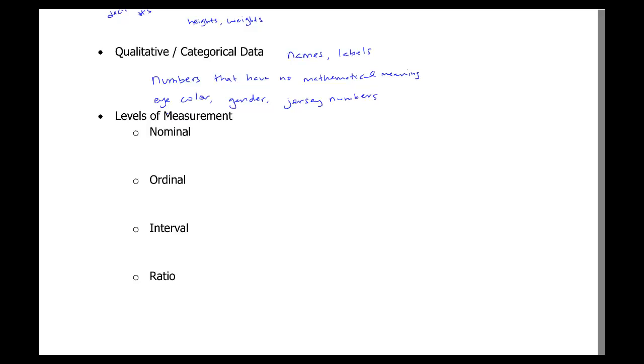Our last group of terms is levels of measurement. And we have nominal, ordinal, interval, and ratio. Nominal is very similar to qualitative or categorical, where it's not a number. So it's not something that you can put in order.